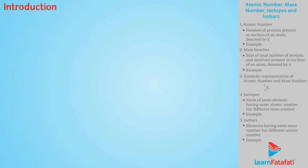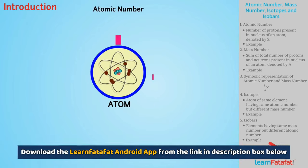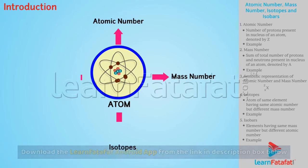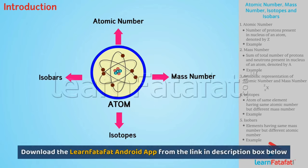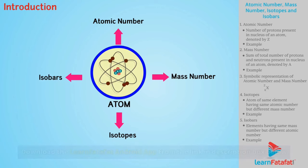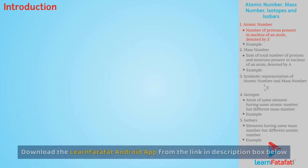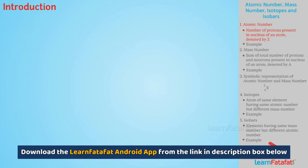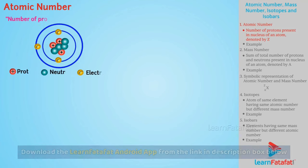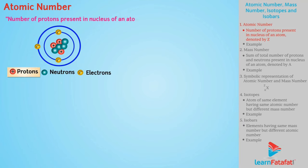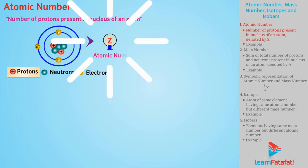In this video, we are going to learn some important terminologies related to the atom. First, we will learn about atomic number. It is the number of protons present in the nucleus of an atom, denoted by capital Z.